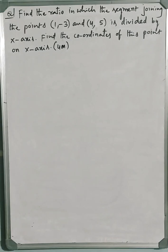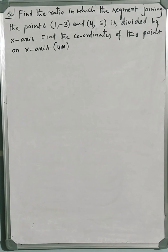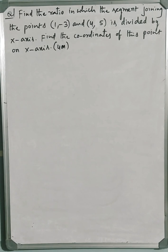Hi students, welcome to the class. Now let us move to coordinate geometry where I have taken a problem on the section formula. The problem is: find the ratio in which the segment joining the points (1, −3) and (4, 5) is divided by the x-axis.